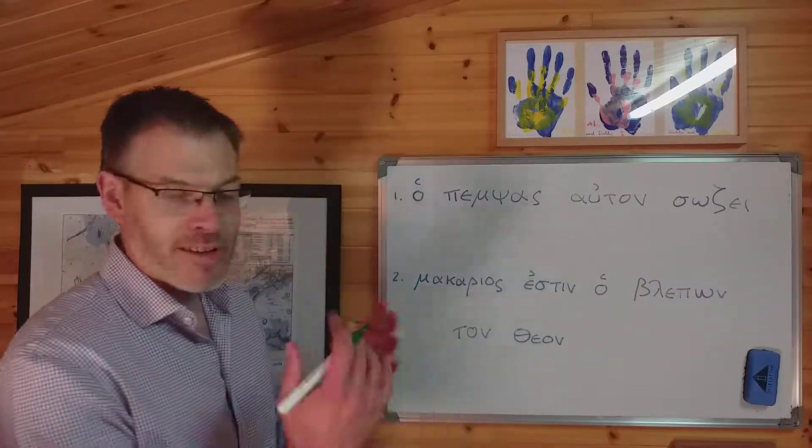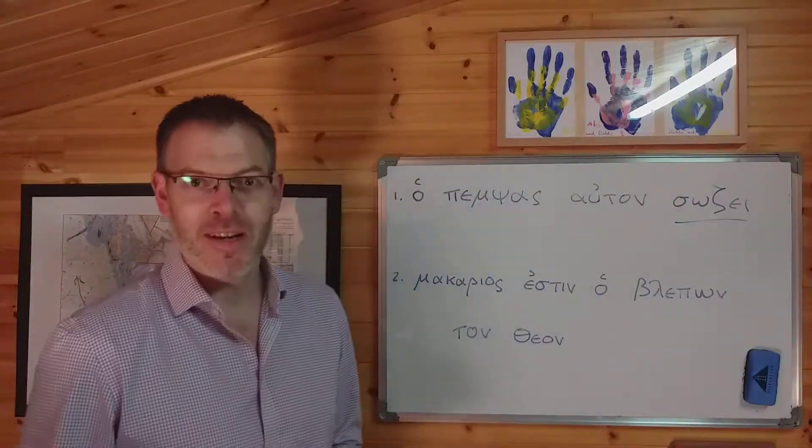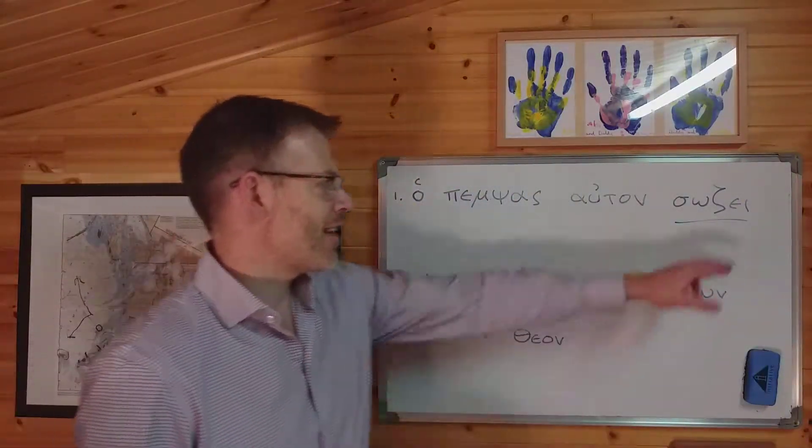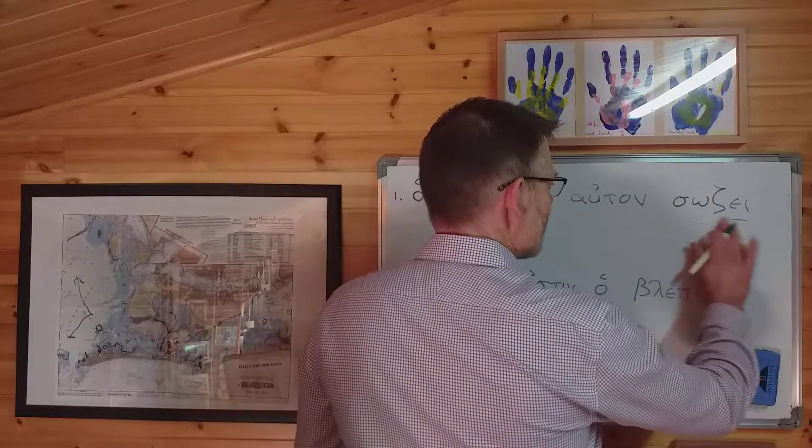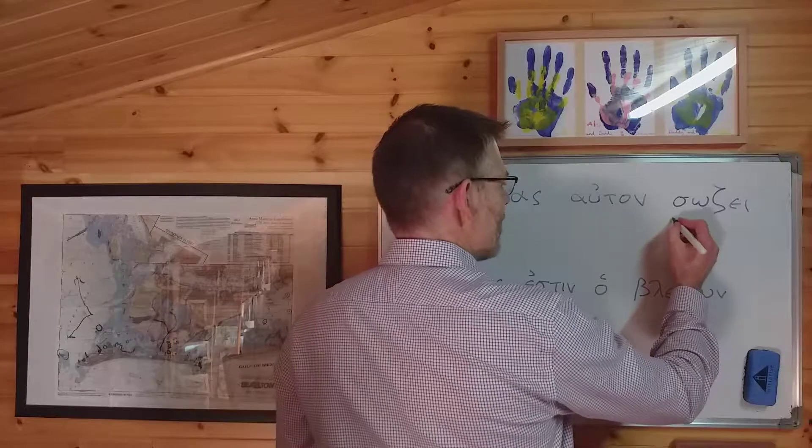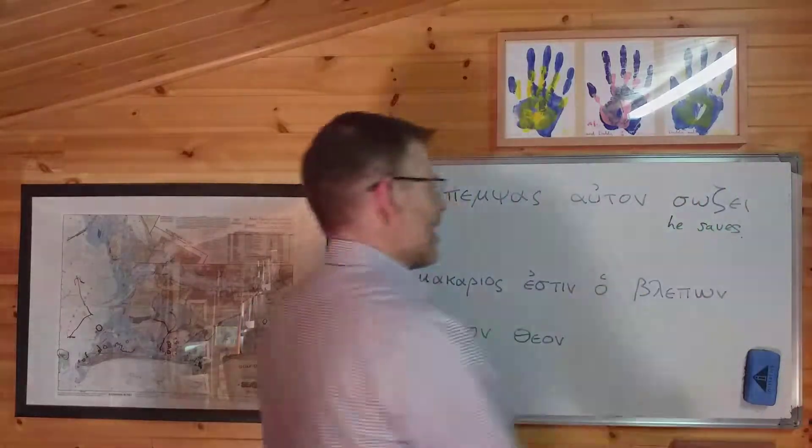Okay, well what do we do? As always we find the verb. The verb is right here. It comes from sozo, meaning I save. This is the third person singular because of the epsilon-iota at the ending, so therefore it means he or she or it saves. So he saves.